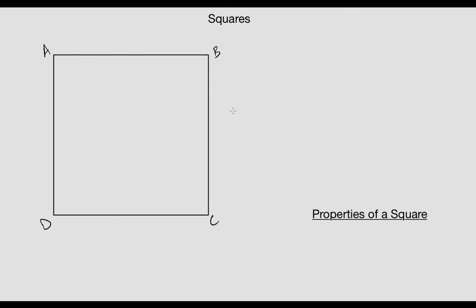Now let's talk about a square. Squares are the most special quadrilateral of all. We'll start with the definition of a square: a quadrilateral with four congruent sides and four congruent angles, which means they're all 90 degrees.